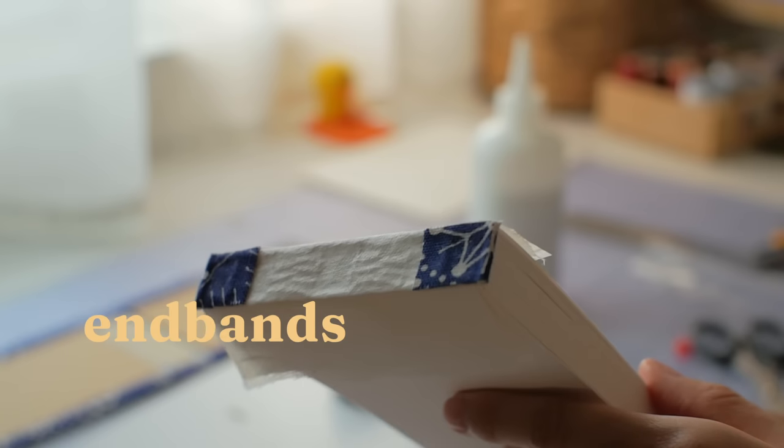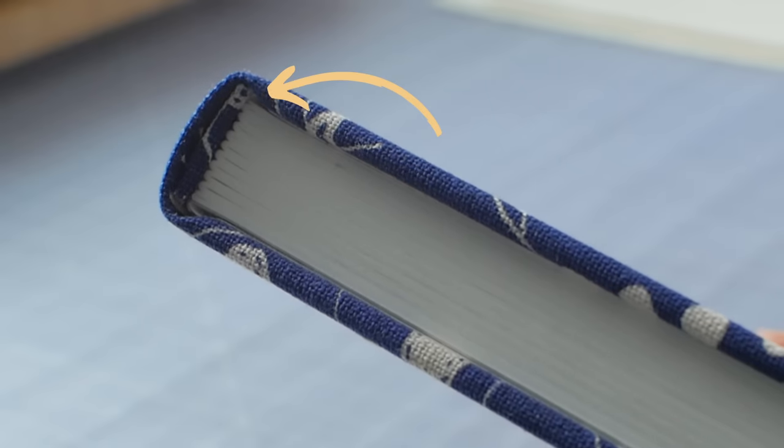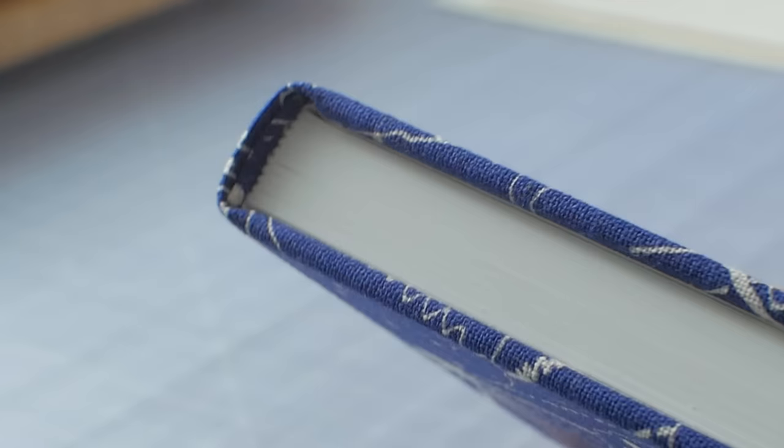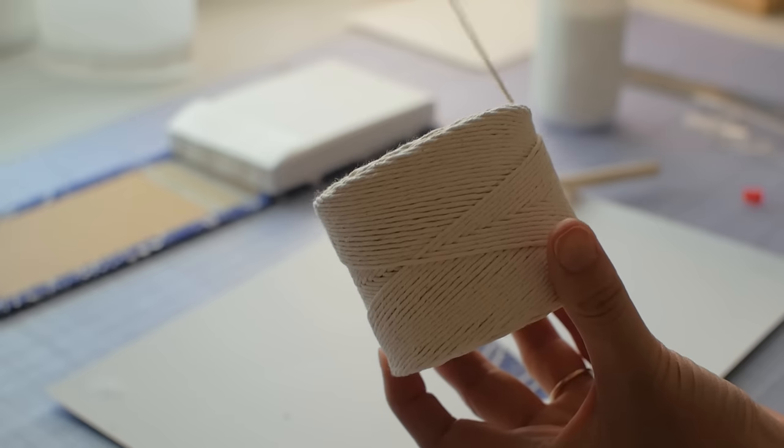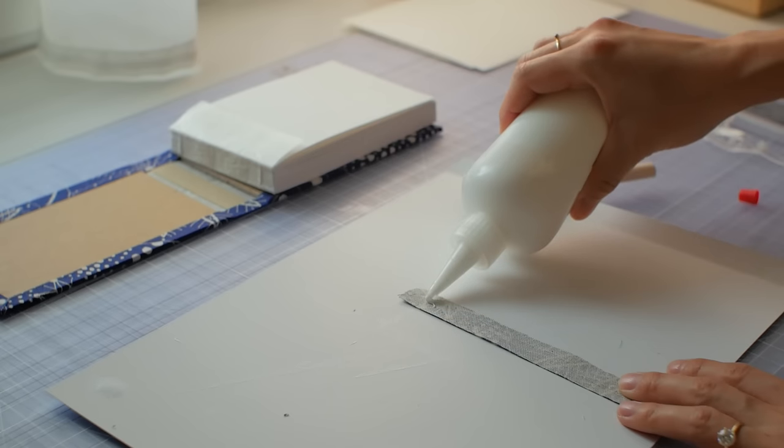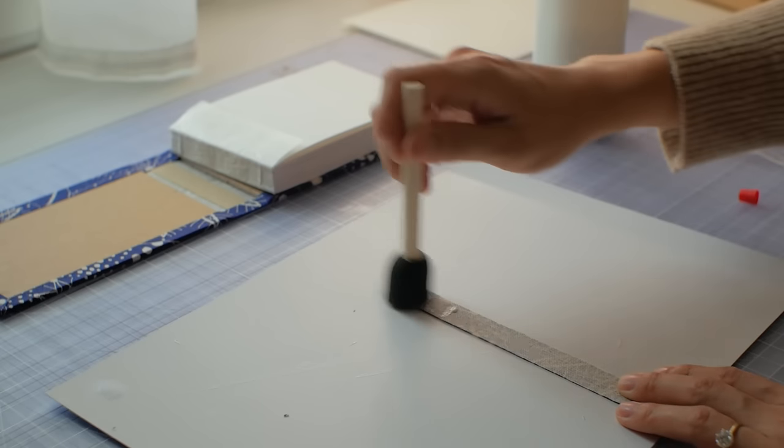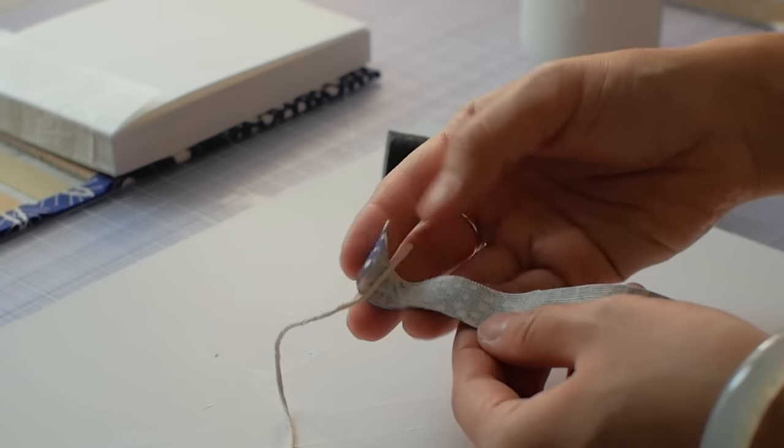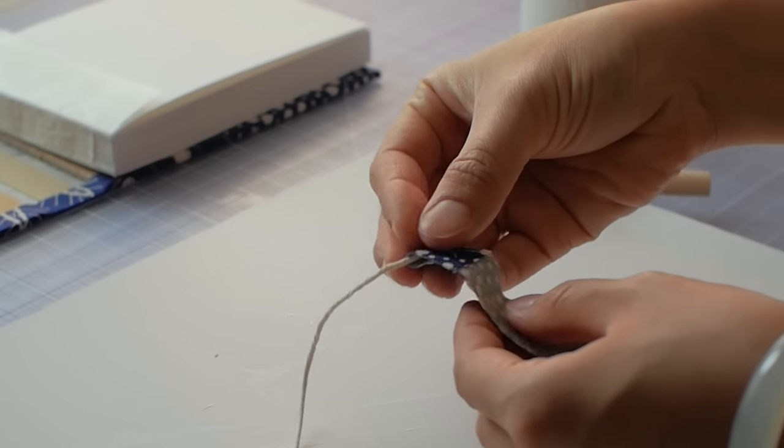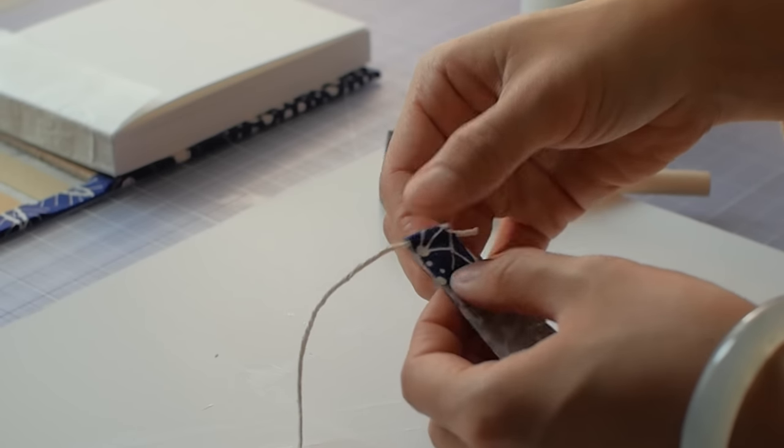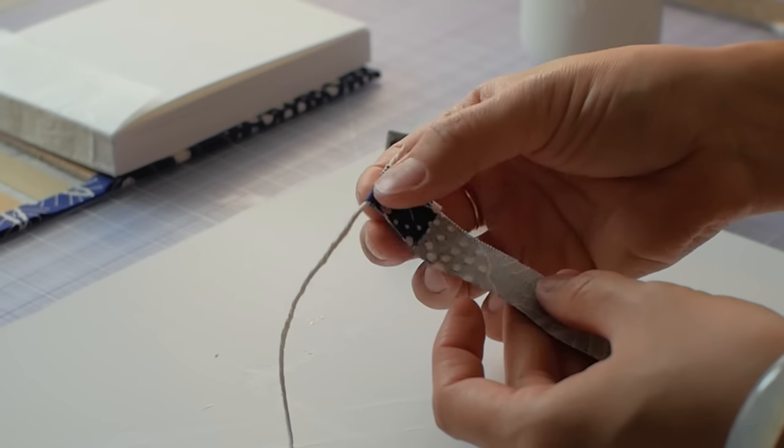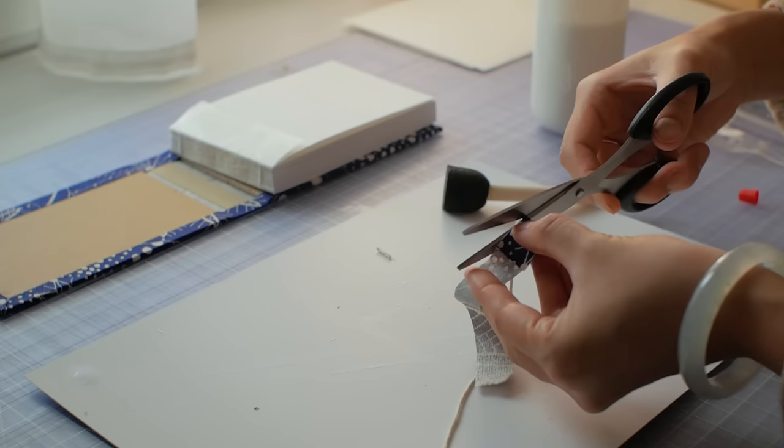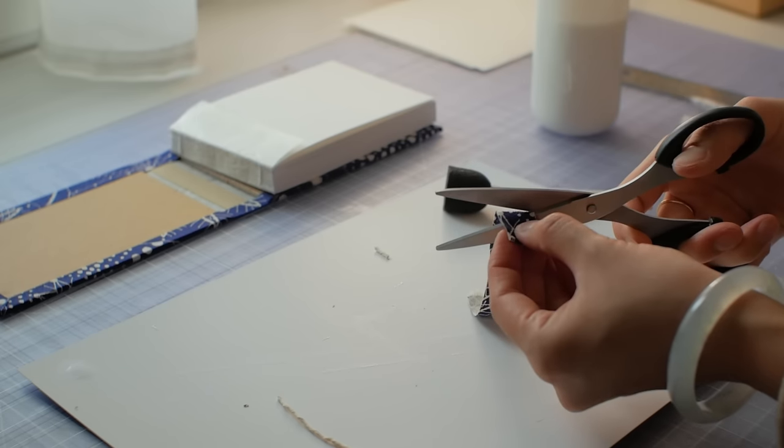End bands cover the space in the spine, between the text block and the cover, and are traditionally sewn on. I think it makes the book look professional and complete. To make glue on headbands, I use a strip of fabric and fold it over some cotton twine. Cut off the excess and glue them onto the head and tail of the text block.